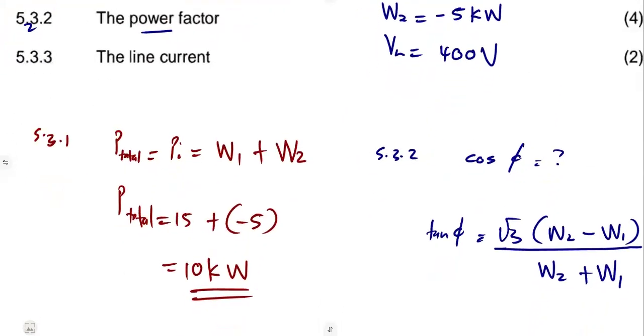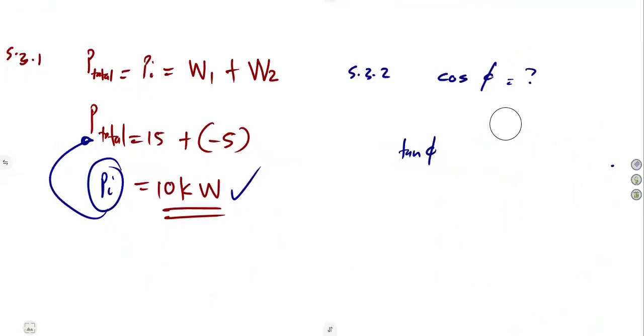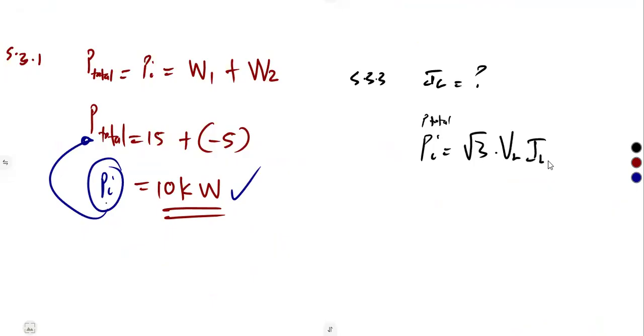Then the line current, 5.3.3. The line current can be calculated because we've got the line voltage and we have got the input. Remember, our P_total here is our input. So that means we can calculate the line current from there. Remember, from P_total, which represents the square root of 3 times line voltage times line current times the power factor. We need the line current. So therefore, our line current is going to be the input, which is our P_total, over square root of 3 times line voltage times the power factor.